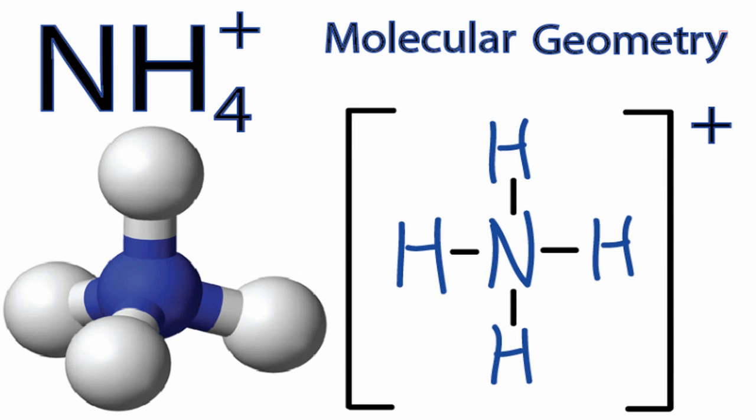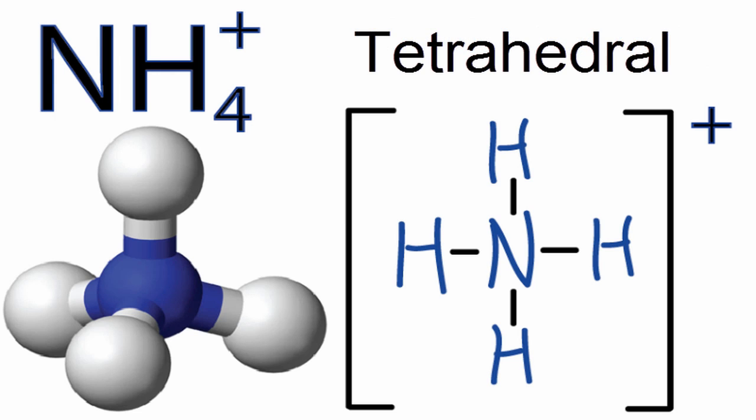You can see the blue in the center, that's the nitrogen, and around it we have the four hydrogens, and they're spread out in what's called a tetrahedral molecular geometry. So the molecular geometry for NH4+ is tetrahedral.